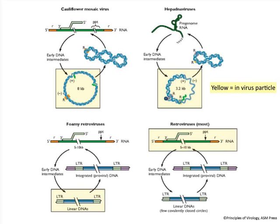Comparing hepatinadiviruses with retroviruses: the retrovirus packages an RNA genome, which gets into a cell and is reverse transcribed to make DNA. In contrast, the hepadnavirus also packages an RNA but reverse transcribes it before leaving the cell, ending up packaging DNA in the particle.